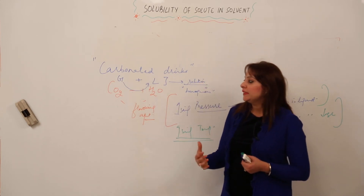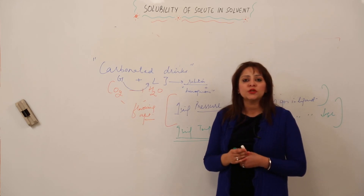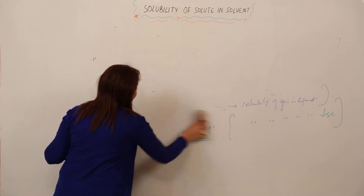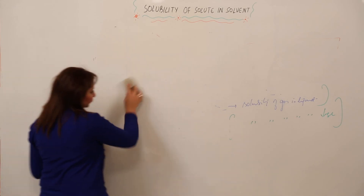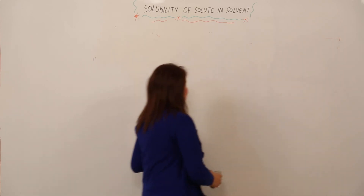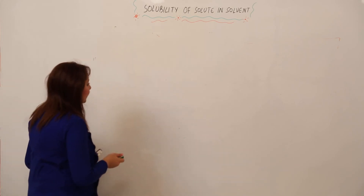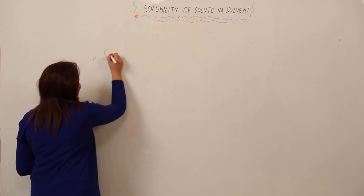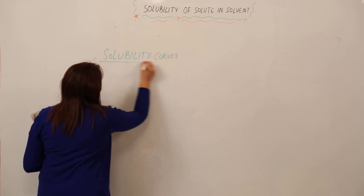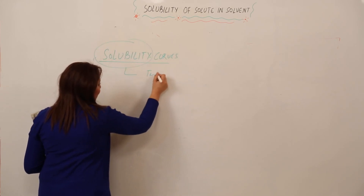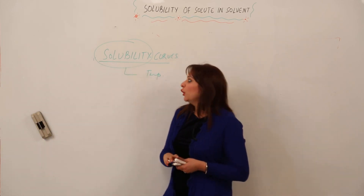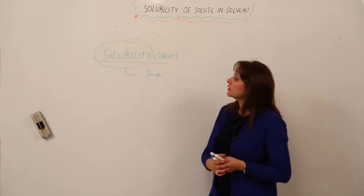This is how temperature and pressure factors affect the solubility of a solute in a solvent. Now we'll be studying solubility curves as well. What is a solubility curve? We already know about solubility. A solubility curve represents how solubility is affected by temperature — we saw that increasing temperature decreases the solubility of gas in liquid. This is how we will start with the solubility curves.